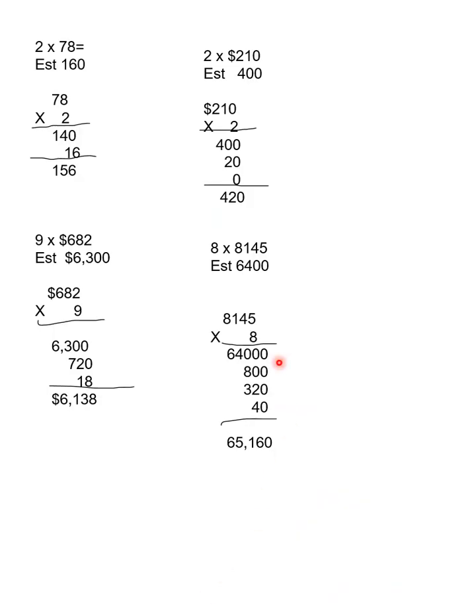Okay, we have a lot to go over. Let's look at the first question. 2 times 78. I estimated 160 because 78 is close to 80. So 78 times 2. 2 times 70 is 140. 2 times 8 is 16. My answer is 156. 2 times $210. My estimate is 400 because 210 is closer to 200. So I said 2 times 200 is 400. 2 times 10 is 20, 420.